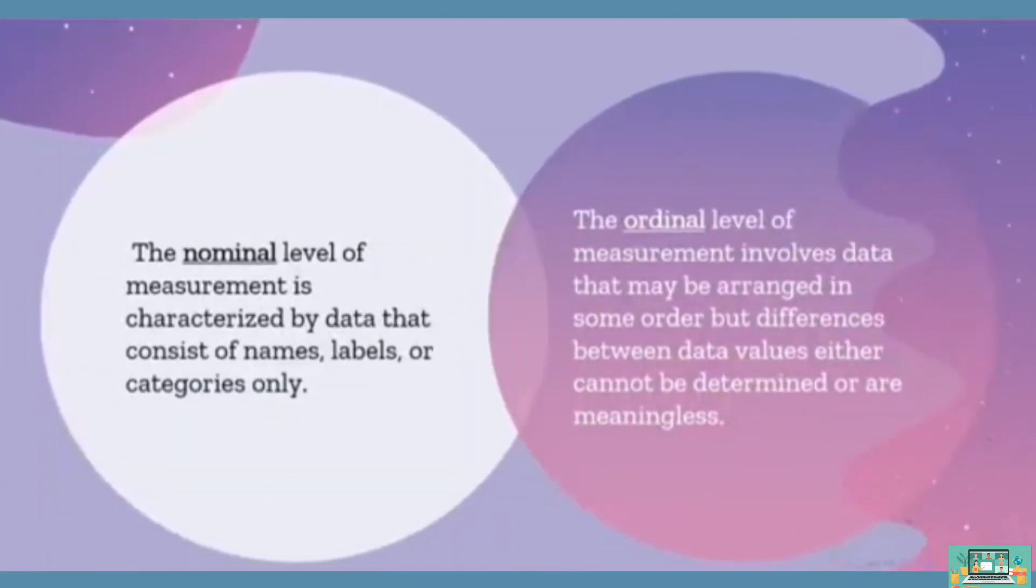The nominal level of measurement is characterized by data that consists of names, labels, or categories only. The ordinal level of measurement involves data that may be arranged in some order, but differences between data values either cannot be determined or are meaningless.